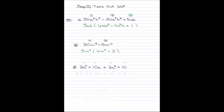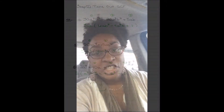For the last example, you have four terms — 1, 2, 3, 4. The GCF among all four terms is just 2; they don't have any variables in common, so we put a 2 on the outside. Inside the parentheses you're left with the remaining factors. This is how you take out a GCF.